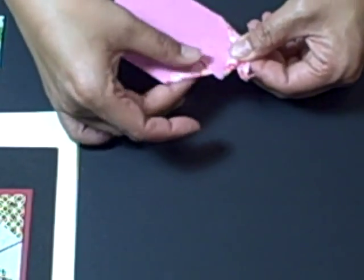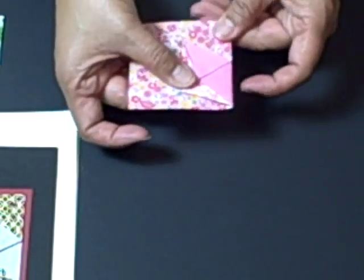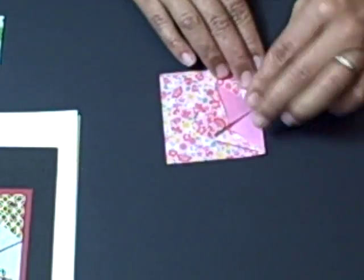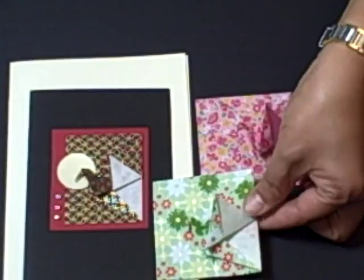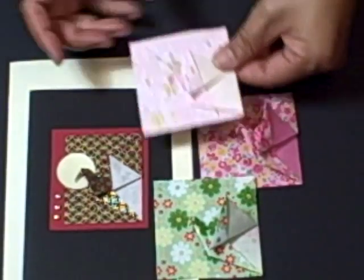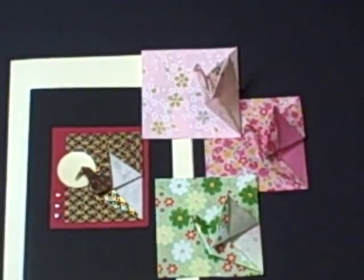There we go. The final step is to just pull it back, and you are done. You can see the variation with the different sheets of origami paper that we have used. Thank you.